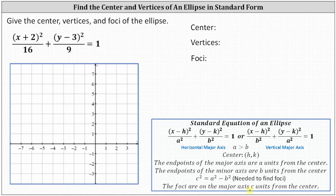Looking at our equation, notice the larger denominator is under the x part of the equation. This indicates we have a horizontal major axis. An easy way to remember this is to think of the x-axis, which is a horizontal axis. Because the larger denominator is under the x part, the ellipse has a horizontal major axis.